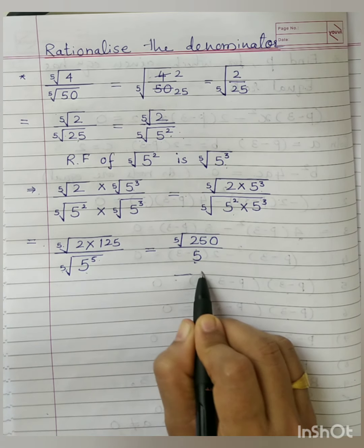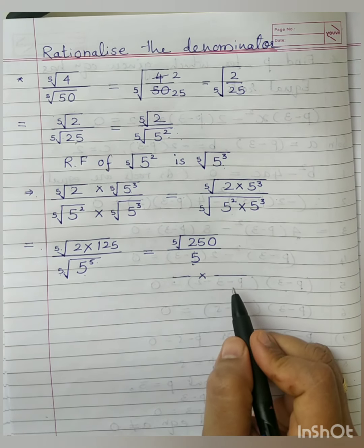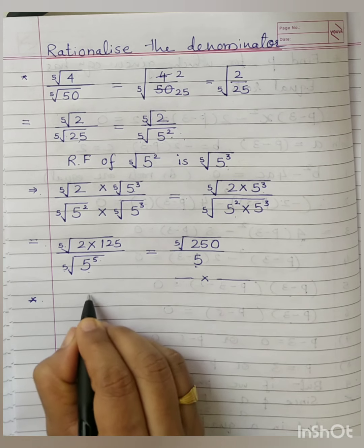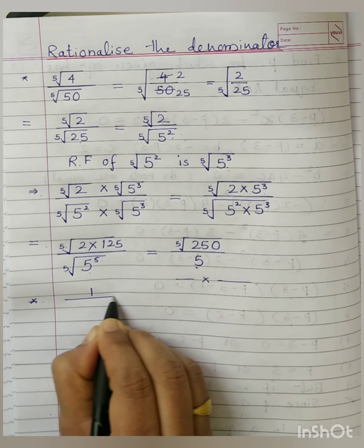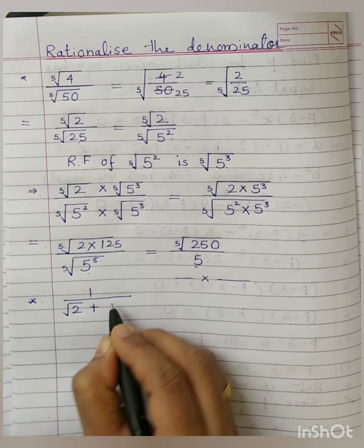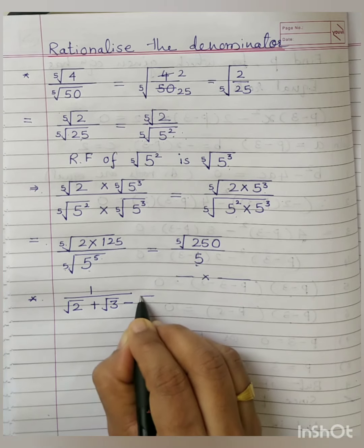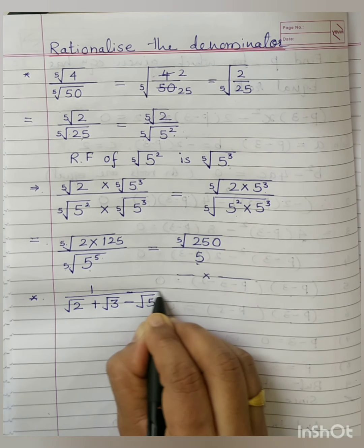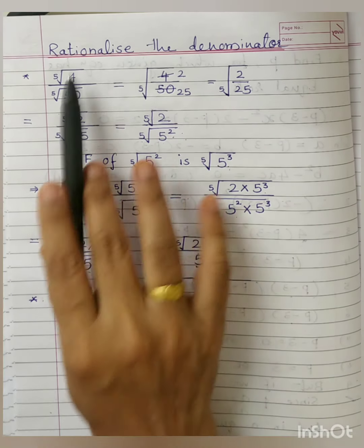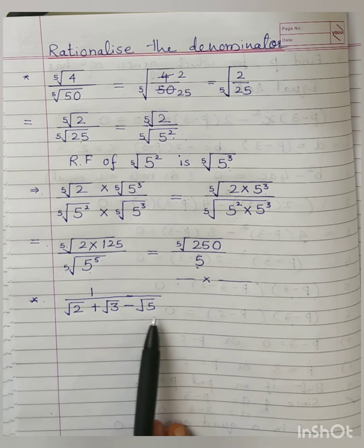One more challenging question — challenging in the sense that multiple times we are going to do rationalization and simplification of the results. So keep all your basic concept tools ready and then see how easy this question is. The question is 1 upon the square root of 2 plus the square root of 3 minus the square root of 5. It is quite an interesting question. Now here, since we have to rationalize the denominator, first we need to find the conjugate of root 2 plus root 3 minus root 5.